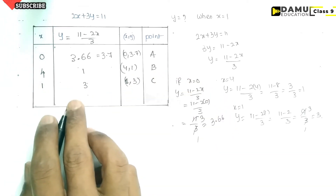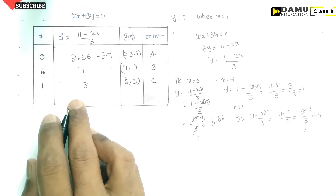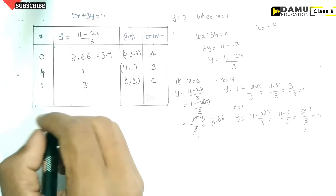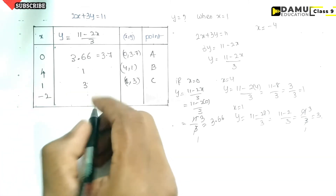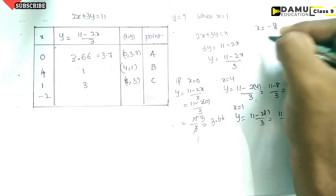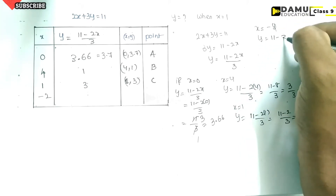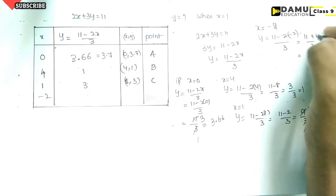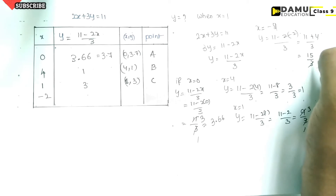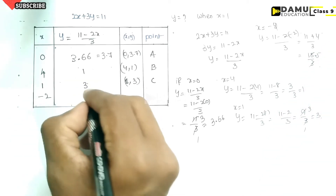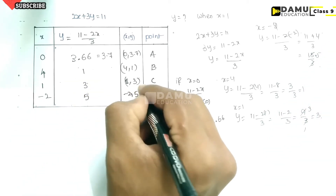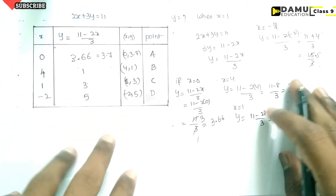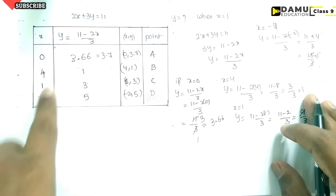We can also use negative values. Let us take x equals minus 2. Then y equals (11 minus 2 times minus 2) divided by 3, so 11 plus 4 divided by 3, which gives 15 divided by 3, and y equals 5. So the point is (-2, 5). Let us call this point D.